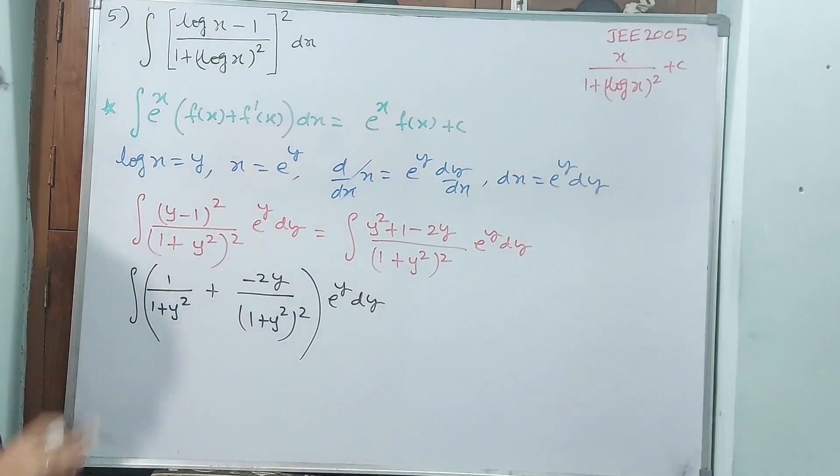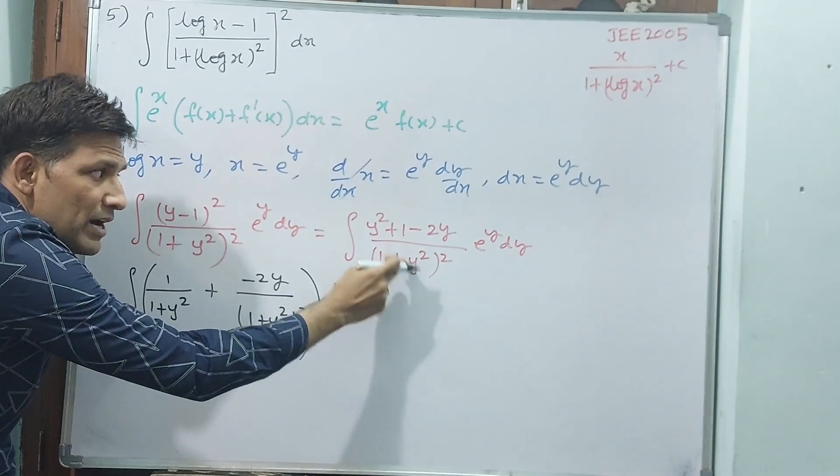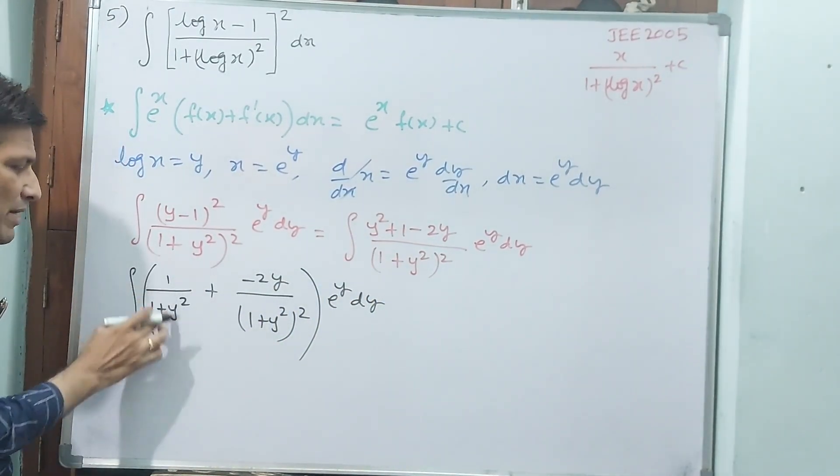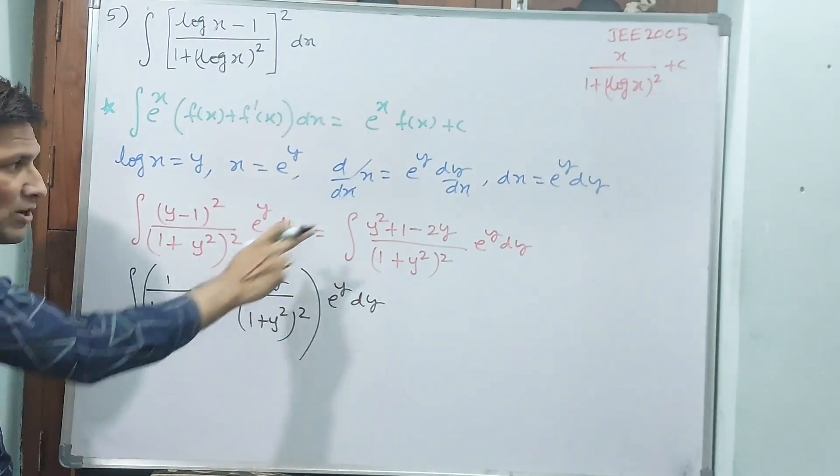e power y dy separate is there, that is not a problem. y square 1 by 1 plus y square, both are same, square going to get cancelled out. That is why 1 by 1 plus y square will come. Plus I have written and minus I have transferred to numerator.